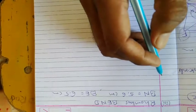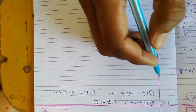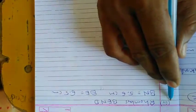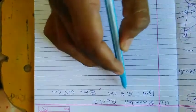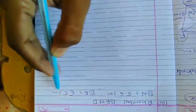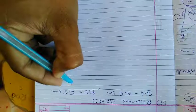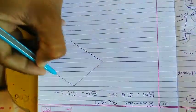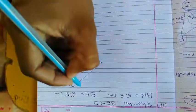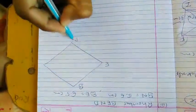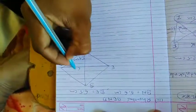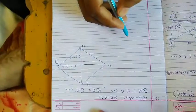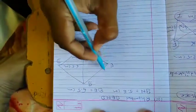Hello students, welcome to our lecture. Standard 8, Chapter 4, Practical Geometry, Exercise 4.2, Example 3: Construct rhombus BEND in which BN is equal to 5.6 centimeters and DE is equal to 6.5 centimeters. First of all, we draw a rough figure of rhombus BEND.